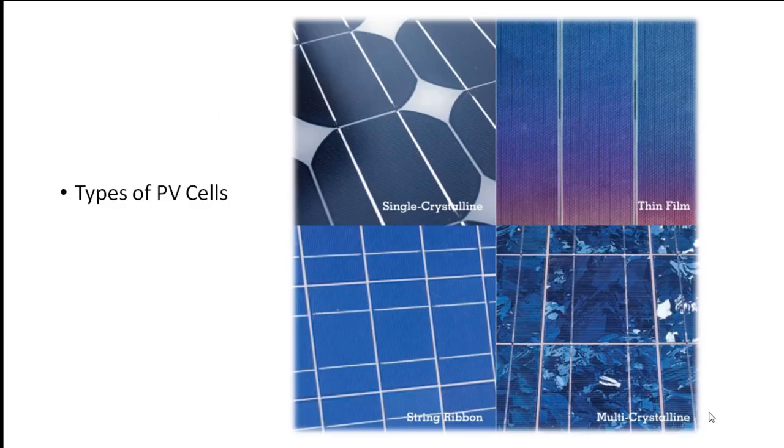Types of PV cells. Solar cells can be made from a variety of semiconductor materials. By far the most common is silicon. As noted earlier, silicon is produced from silicon dioxide, which is derived from two sources: quartzite and silica sand.